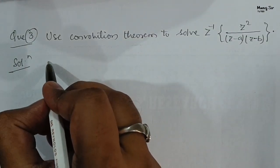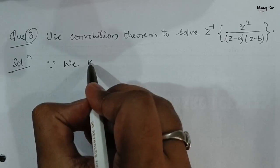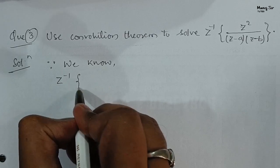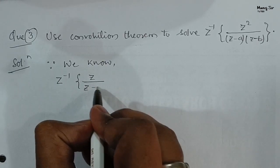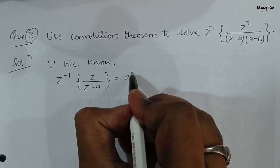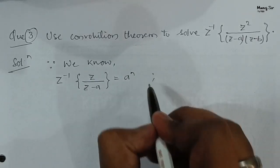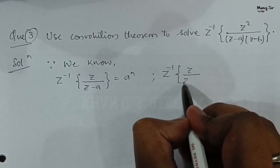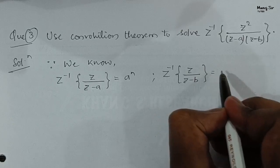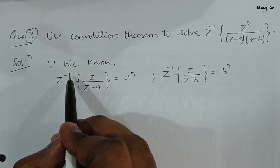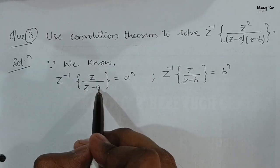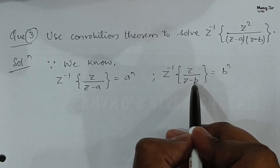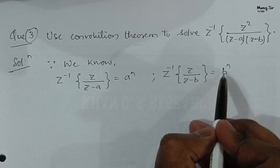We know that the inverse Z transform of Z/(Z − A) is A to the power n. Similarly, the inverse Z transform of Z/(Z − B) is B to the power n.